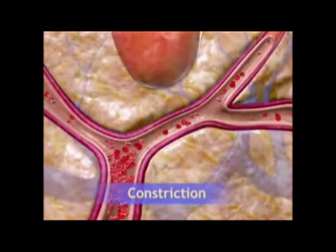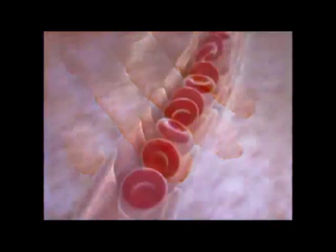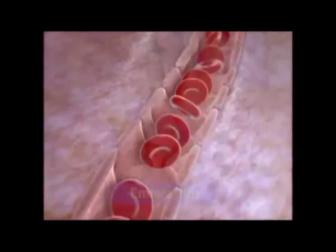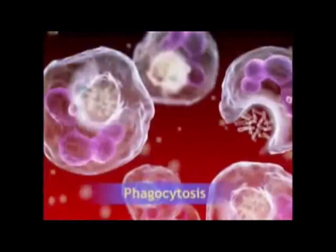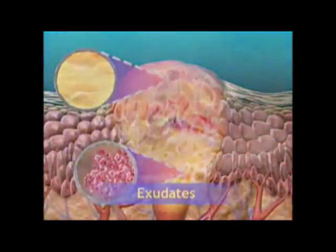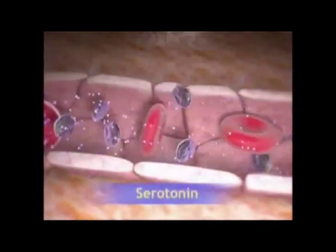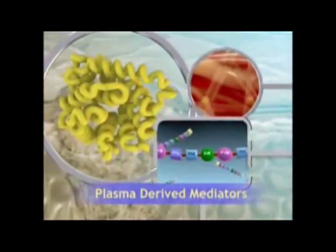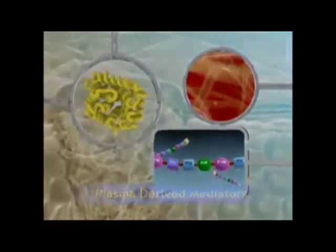Acute inflammation comprises a variety of complex protective responses to injury that, together, lay the groundwork for the next stages of the body's recovery: immune response and tissue repair.